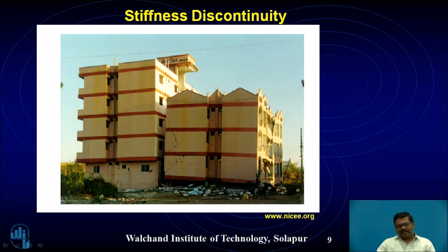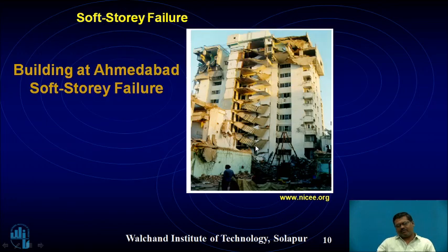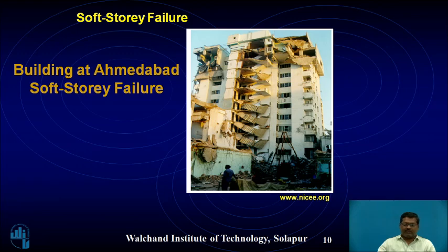This is a G+5-story building that failed due to stiffness discontinuity, causing collapse. Another multi-story building of more than 10 stories in Ahmedabad failed due to the soft story effect. A soft story is a story in which the lateral stiffness is much lower than the average of three successive stories. Soft story failure caused this building to collapse.